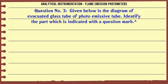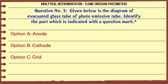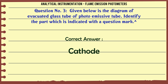Given below is the diagram of an evacuated glass tube or photoemissive tube. Identify the part which is indicated with a question mark. A. Anode. B. Cathode. C. Grid. D. Dynode. The correct answer is: Cathode.